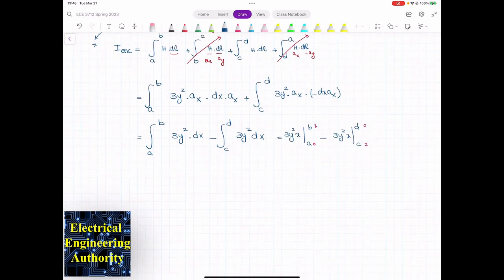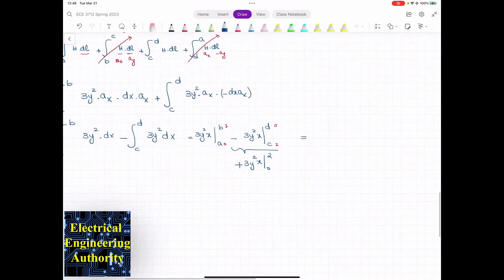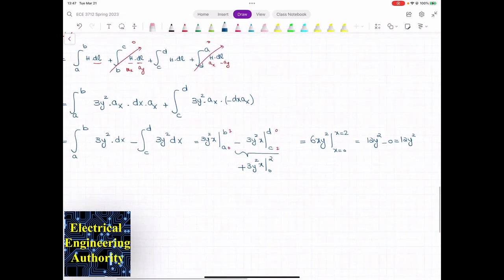Now, this one, if you separate this, I can write this as positive 3y squared x from 0 to 2. Do you agree with that? I changed the limits of the integral and multiplied it by a negative sign. So at the end, I'm going to be left with 6y squared when x is going from 0 to 2, because I only had dx. So that is 12y squared minus 0, which will be 12y squared. That will be 12y squared.